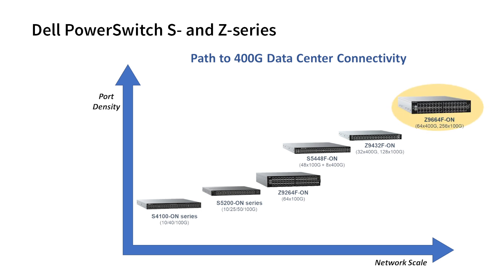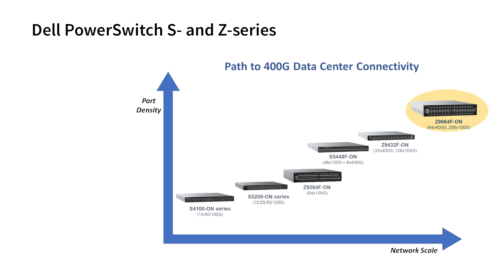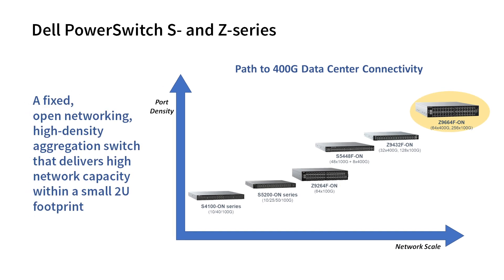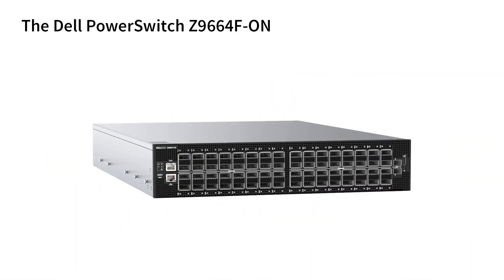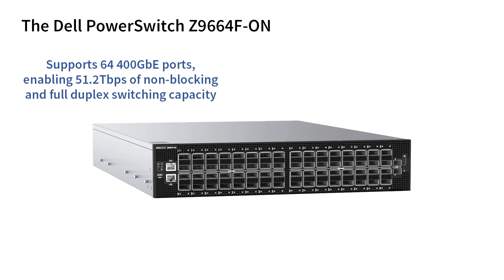Enter the Dell PowerSwitch Z9664F-ON, the latest model in the PowerSwitch Z series designed to simplify data center networks. As with other models in the PowerSwitch series, the Dell PowerSwitch Z9664F-ON is a fixed, open networking, high density aggregation switch that delivers high network capacity within a small 2U footprint. The primary use case is building out 400 Gigabit Ethernet data center fabrics, as this model supports 64 400 Gigabit Ethernet ports, enabling 51.2 Terabits of non-blocking and full duplex switching capacity.